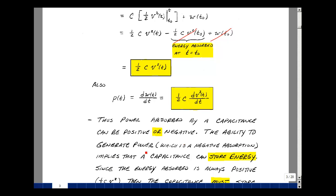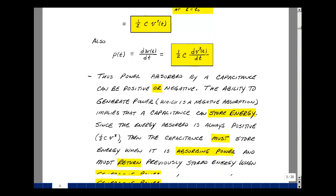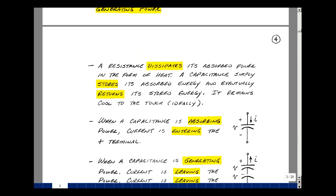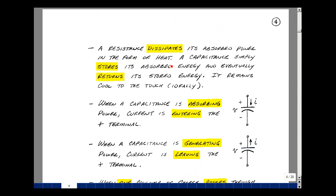The ability to generate power, which is negative absorption, implies that a capacitance can store energy. If the energy absorbed is always positive, then the capacitance must store energy when it's absorbing power, and it must return this previously stored energy when it's generating power. Capacitance is kind of a storage tank. We can put energy in it, and we can take it back out again.